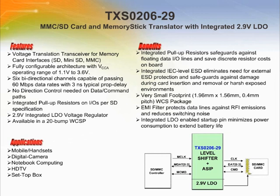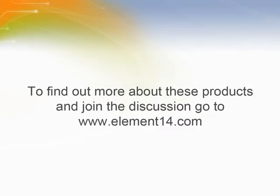The TXS0206 is a level shifter for interfacing microprocessors with multimedia cards, secure digital cards, and memory stick cards. It includes a high speed level translator along with ESD protection, EMI filter, and circuitry. The voltage level translator has two supply voltage pins: VCCA and VCCB, which can be operated over the full range of 1.1V to 3.6V. The TXS0206 enables system designers to easily interface applications, processors, or digital basebands to memory cards and SDI or peripherals operating at different IO level voltages.